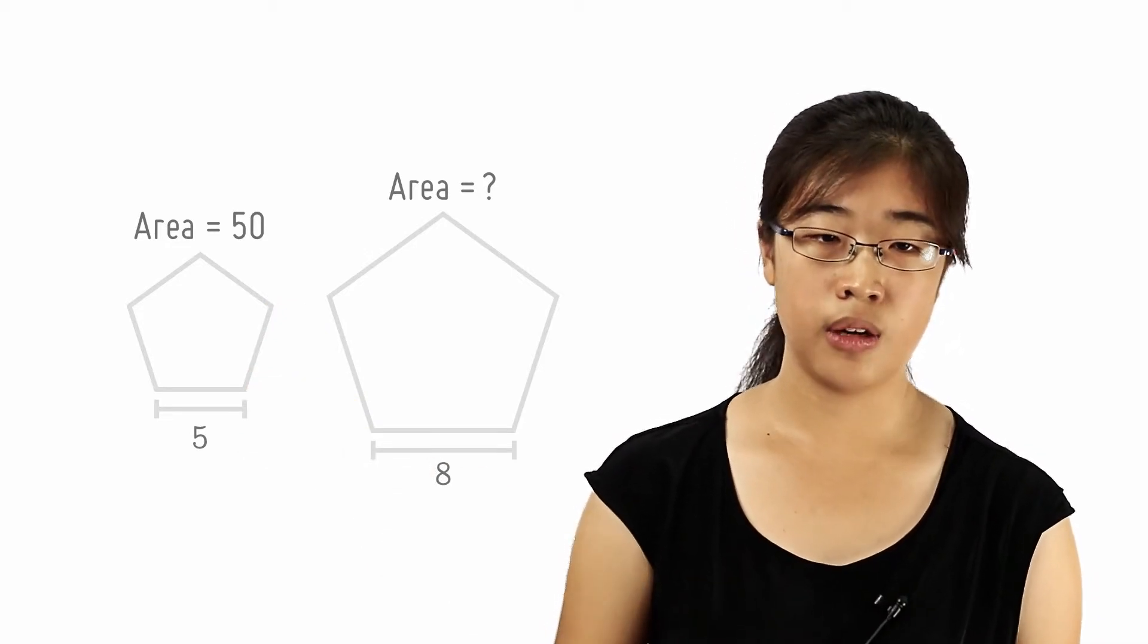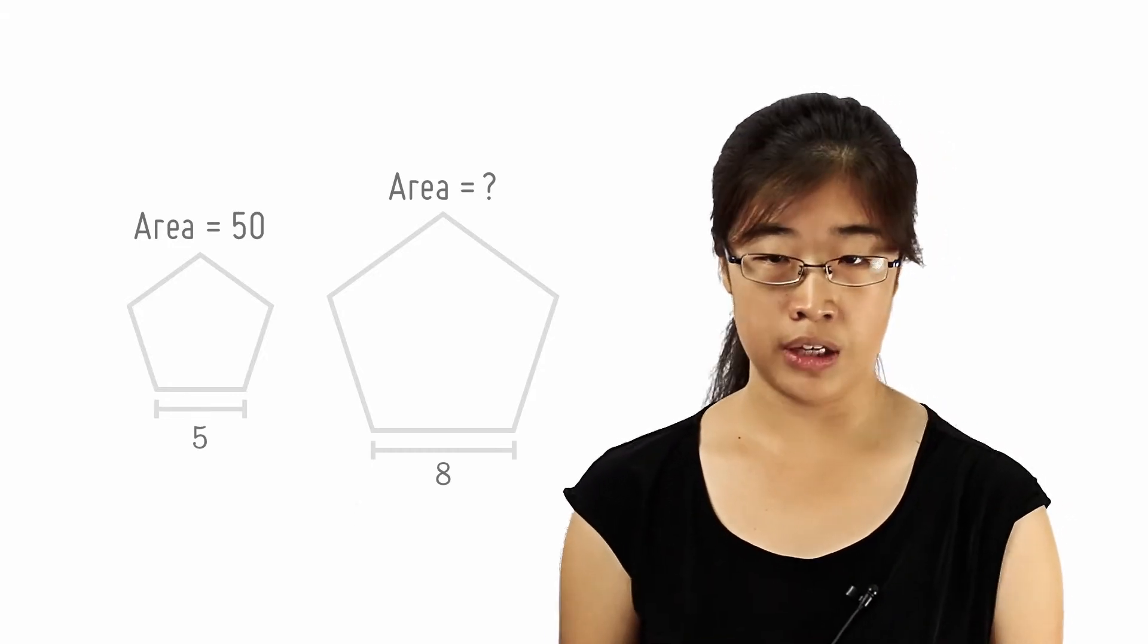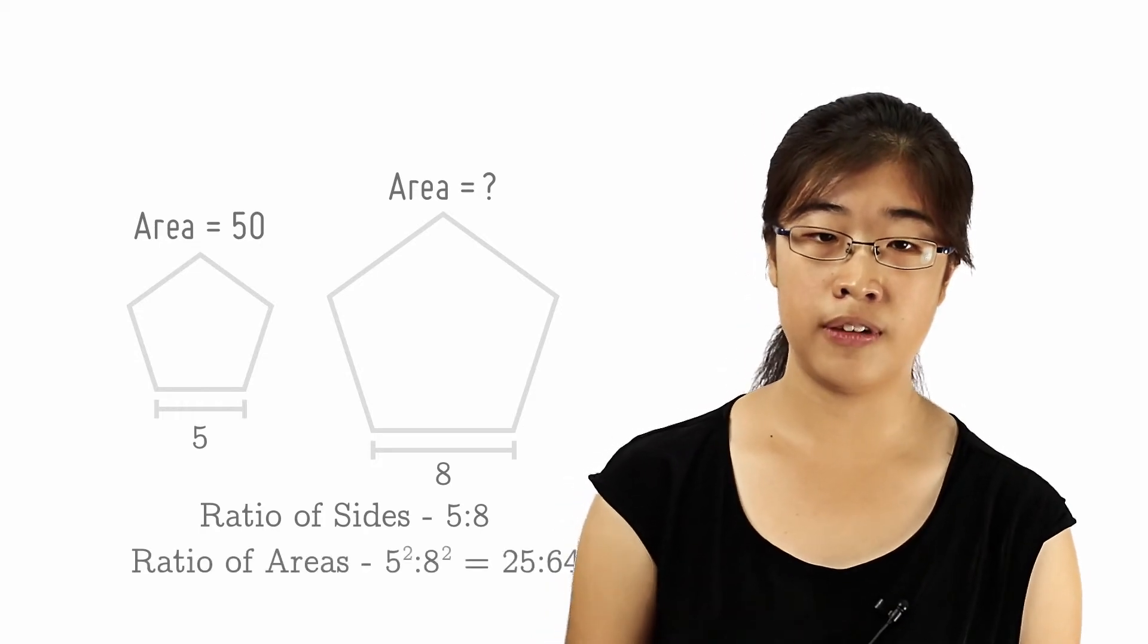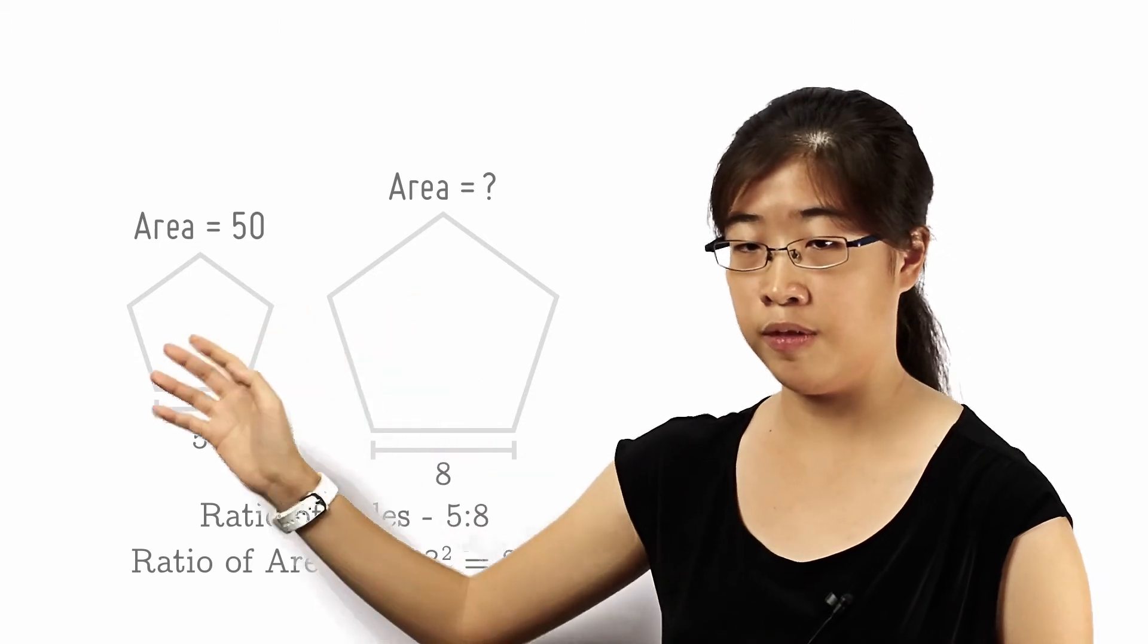Since we are given two lengths, we can find the ratio of their corresponding sides, which is 5 to 8. This means that the ratio of their areas is 25 to 64. So if the smaller polygon has an area of 50, we can find the area of the larger polygon.